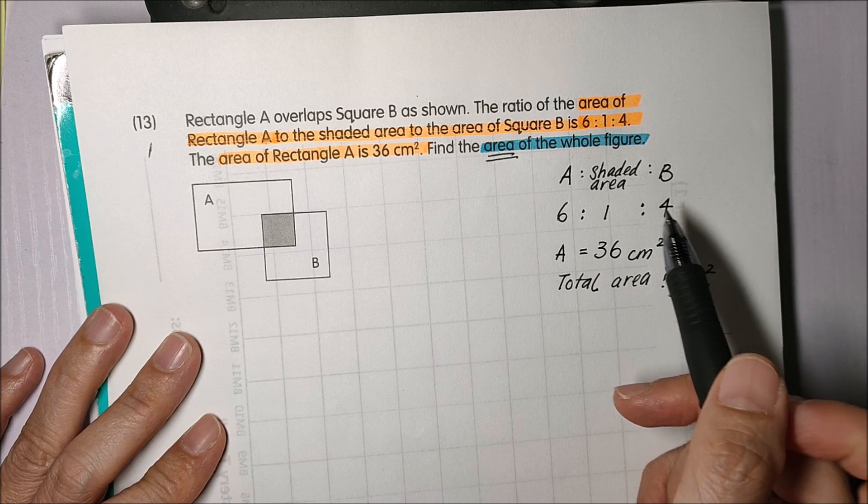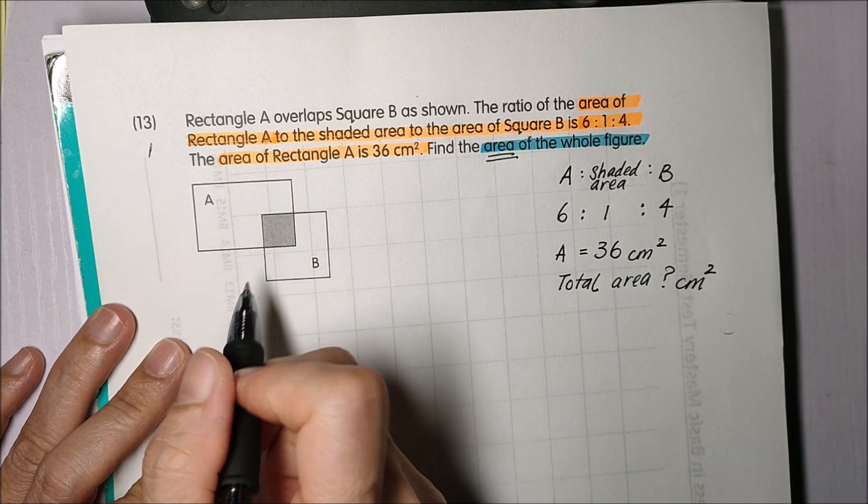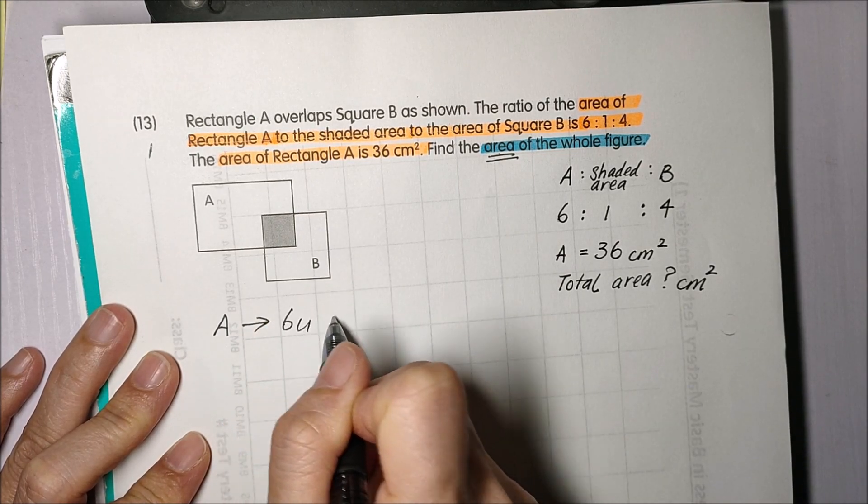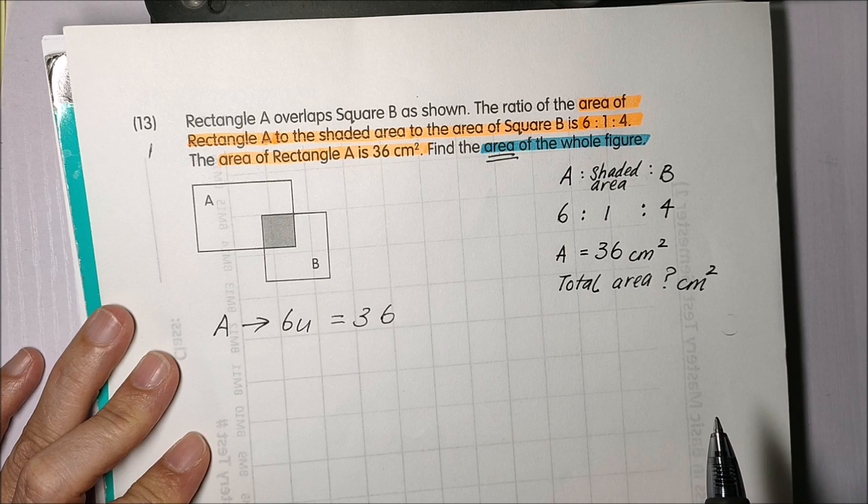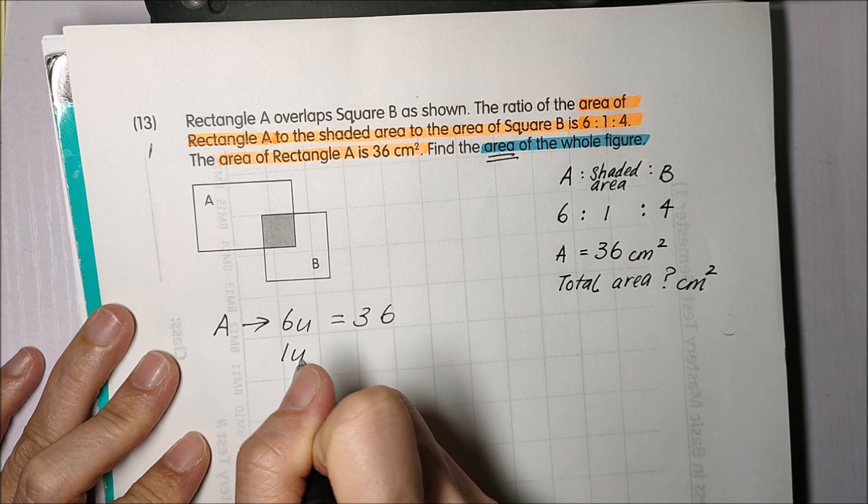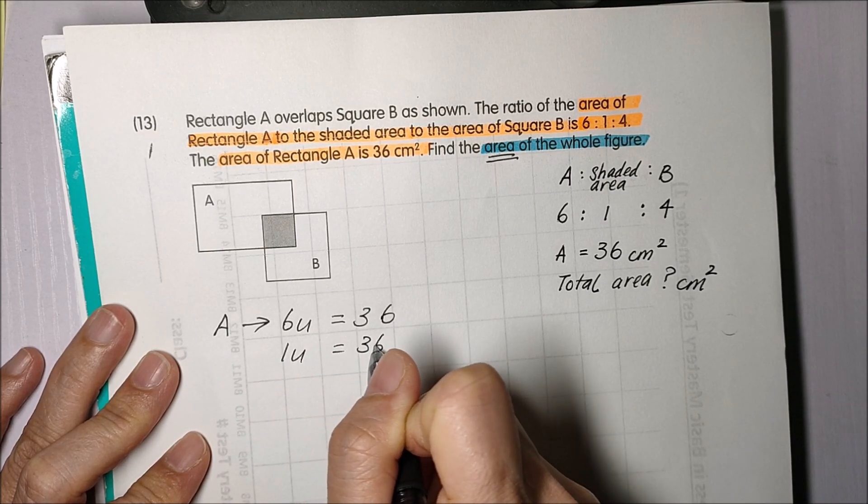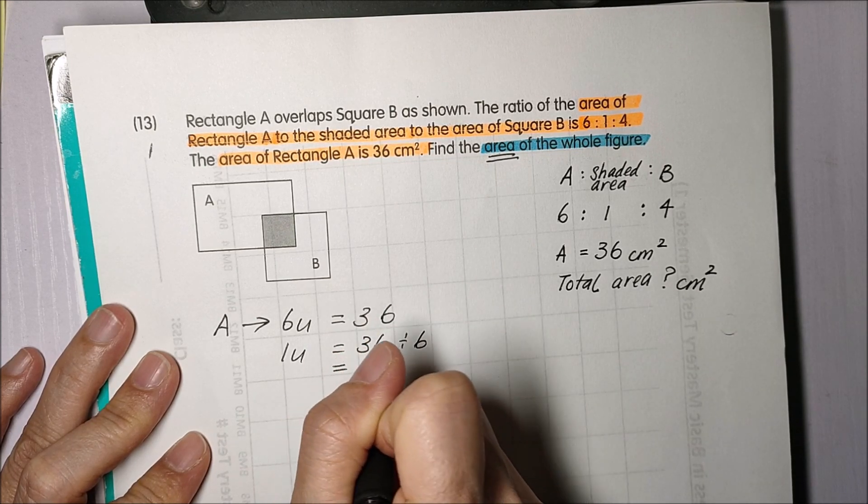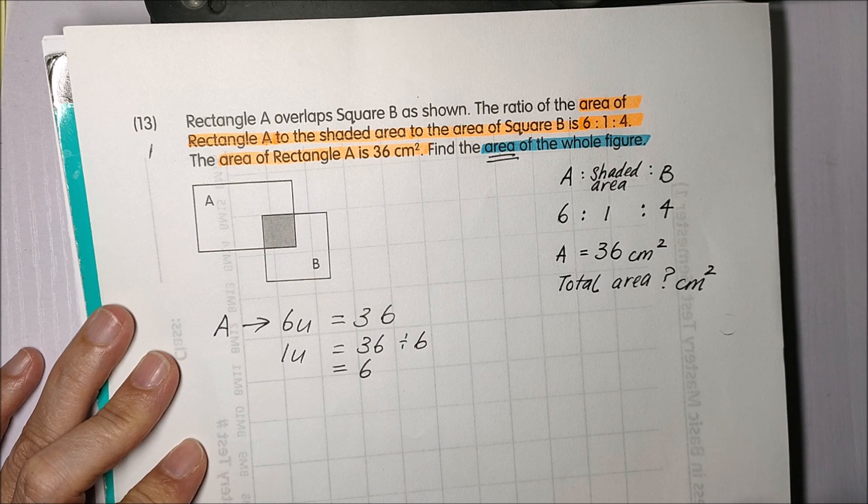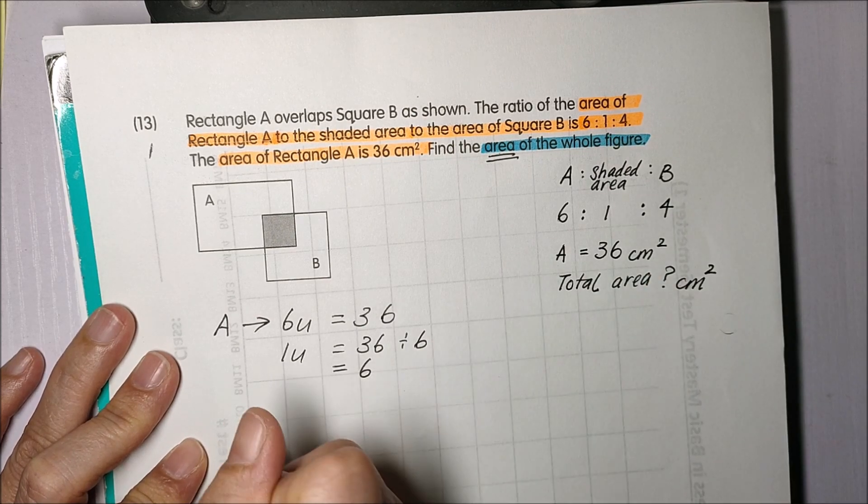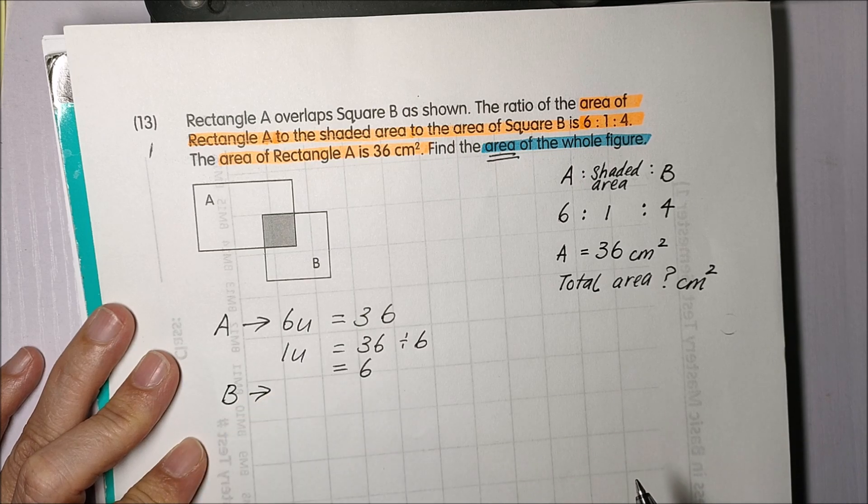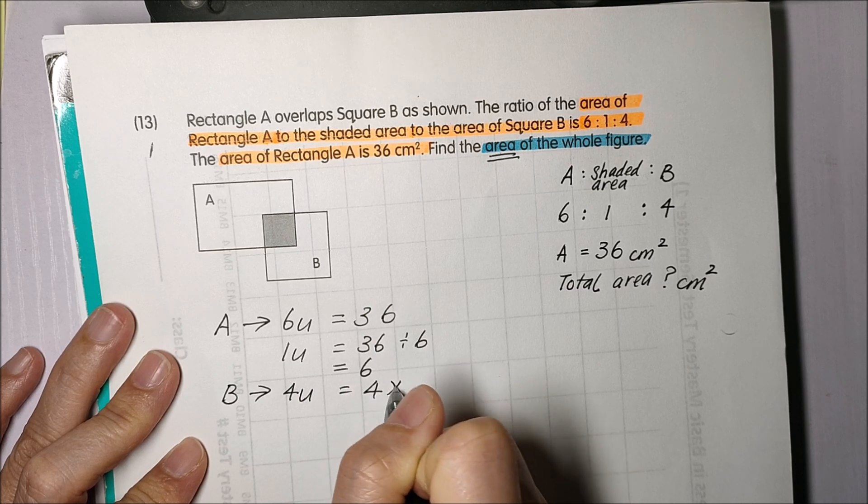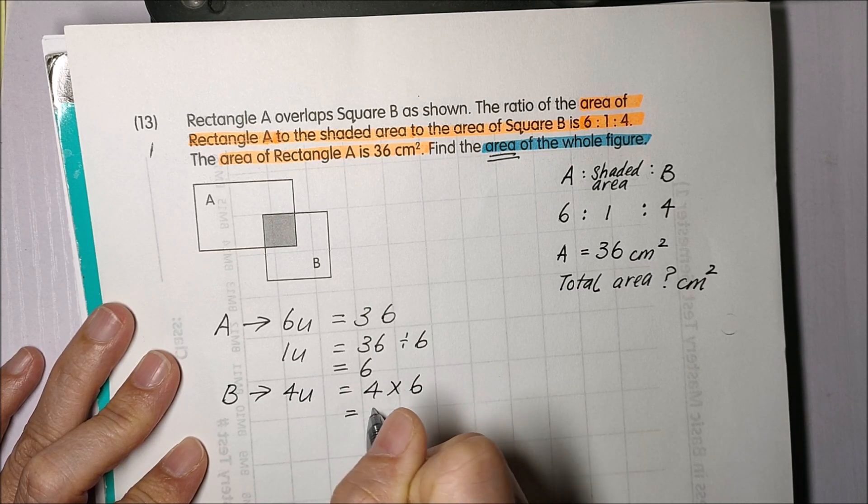So A is 6 units which is equal to 36. So 1 unit is 36 divided by 6. That will give me 6. So let's find B. B is 4 units which is 4 times 6 equal to 24.